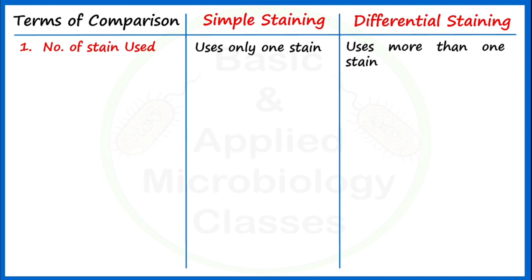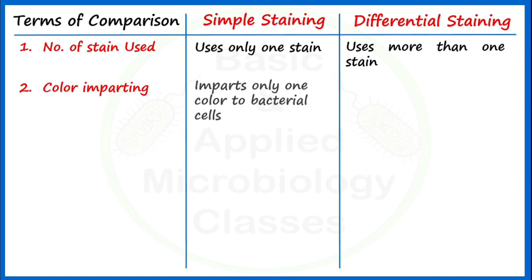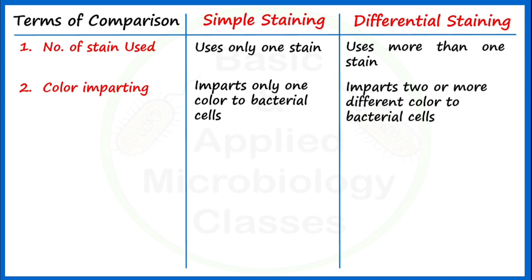The second point of difference is color imparting. Simple staining imparts only one color to all bacterial cells under examination, as we use only one stain. Differential staining imparts two or more different colors to bacterial cells.